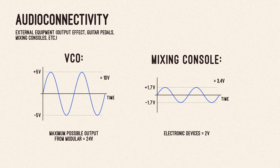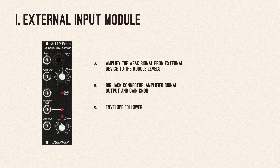Usually it's much smaller, peaking around 1V or less. Output of consumer electronics devices such as a phone will be really low, with peak amplitude maxing at less than a volt. When you want to use these external signals, you can use external input and output modules. An external input module will amplify the weak signal coming from your keys or laptop to module levels. It usually has a big jack connector and a gain knob to amplify the incoming signal. Sometimes such a module will have an envelope follower, which can analyze the volume of the incoming signal and turn it into voltage you can use for modulation or CV-able parameters in your system.